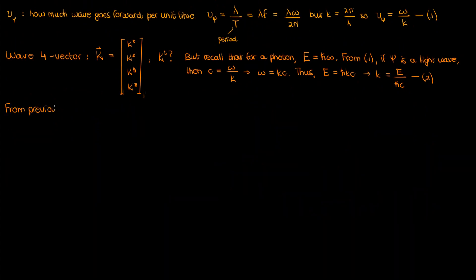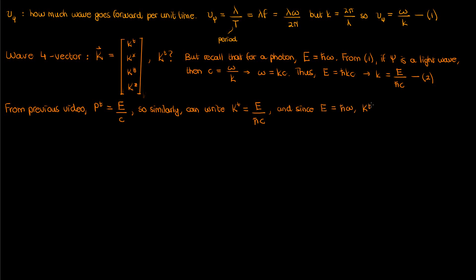We know from my previous video that the ratio of energy to the speed of light comprises the time component of the momentum 4-vector, p-superscript-t. Just like how p-superscript-t was E over c, we can express the time component of our wave vector as E over h-bar times c. Since E equals h-bar times omega, plugging back into equation 2 gives k-superscript-t equals omega over c. So our complete wave 4-vector K can be written as (omega/c, k^x, k^y, k^z).